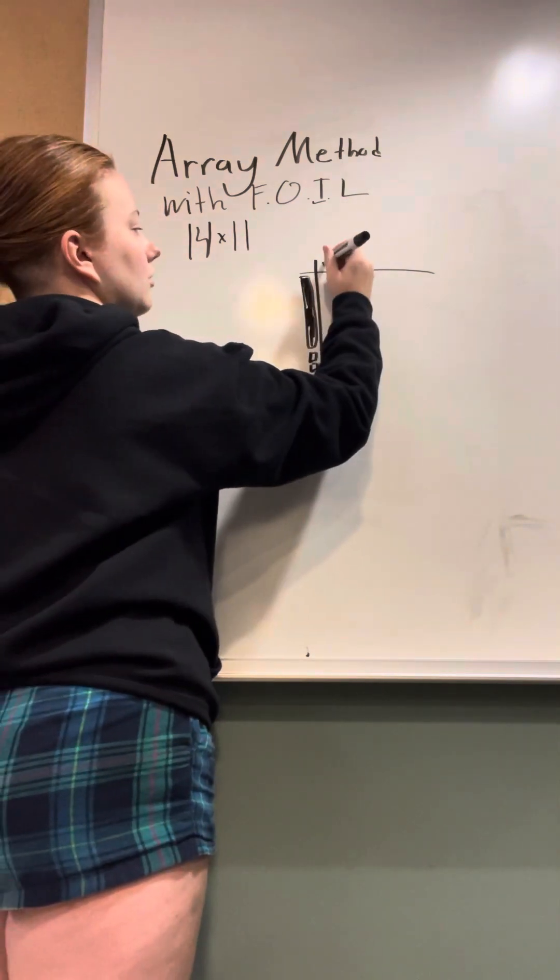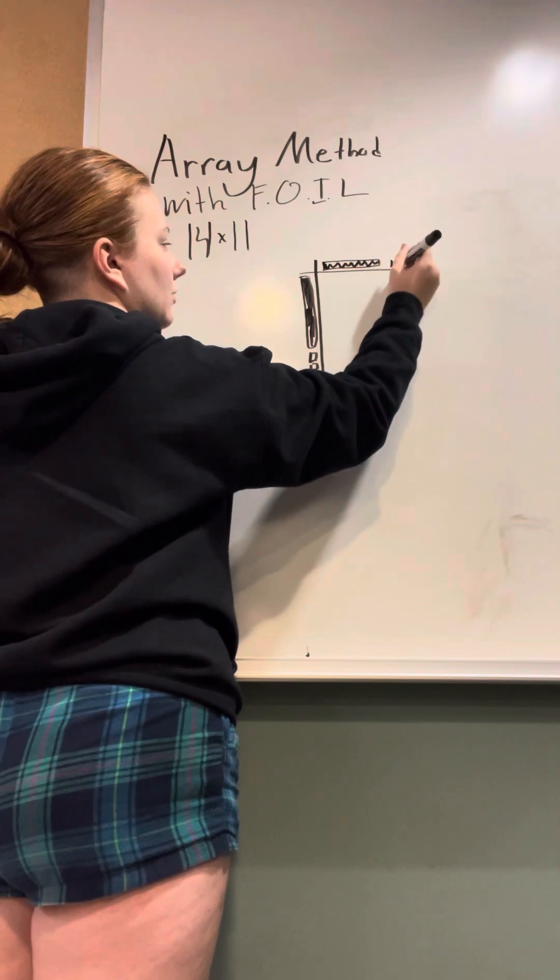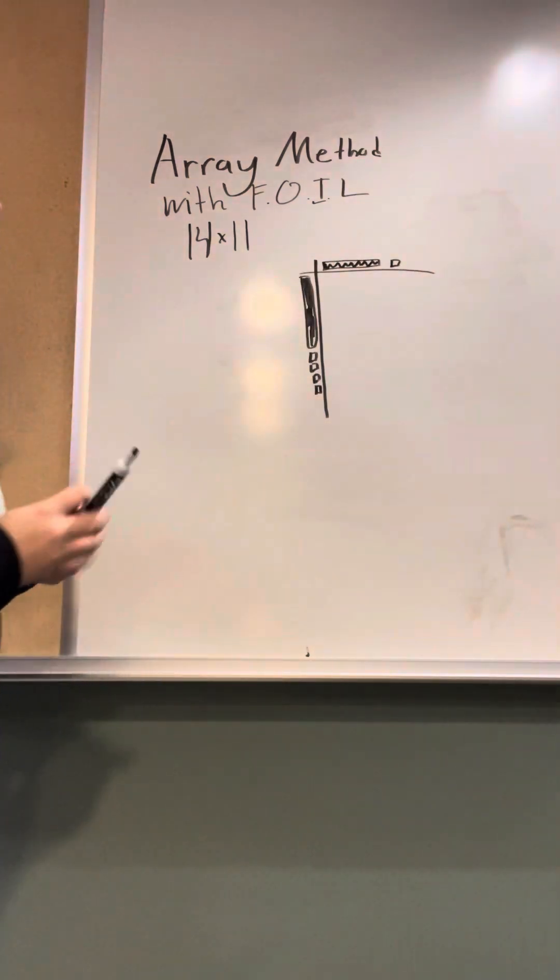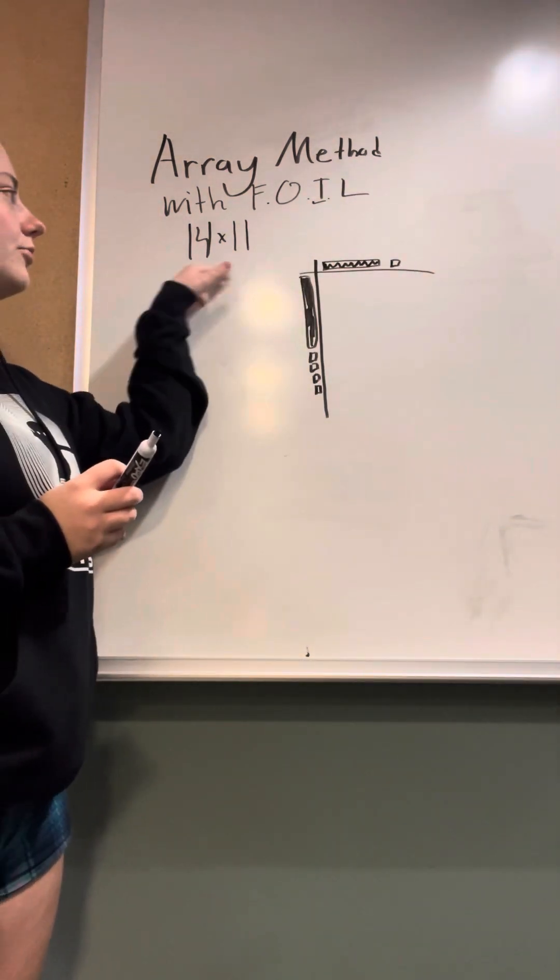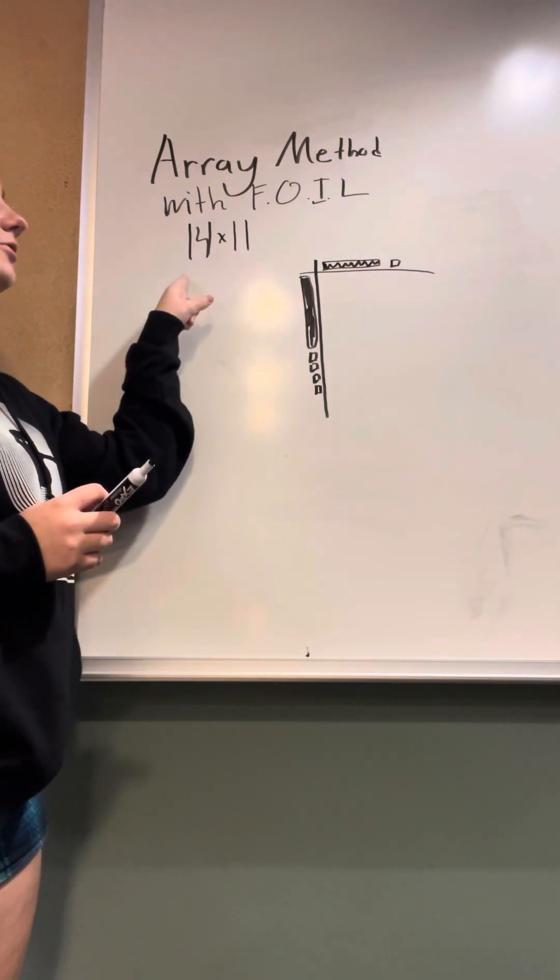And then for 11, you're going to do another long for 10, and then one short. So now that you have your originals, and then also on the array, we're going to break this down so we can FOIL it.